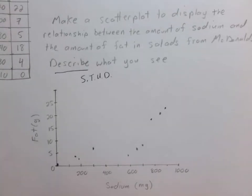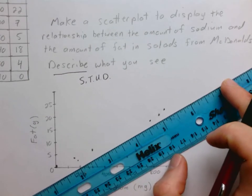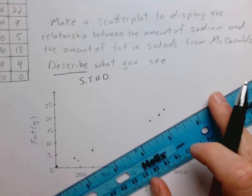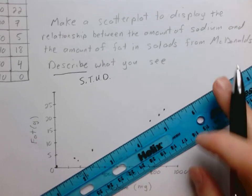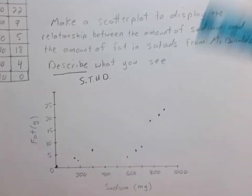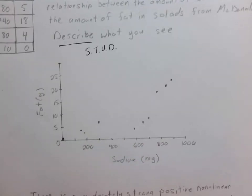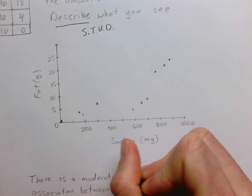The first thing I'm going to look for is strength. In comparison to a line, if I use my ruler as a guideline, it isn't super close to being a line. You have this one cluster a little bit down below, and if I move it up a little bit you can see it's not exactly a great line, but it's not terribly far off. So I would consider that moderately strong. That strength — moderately strong — is the first part of STUD.